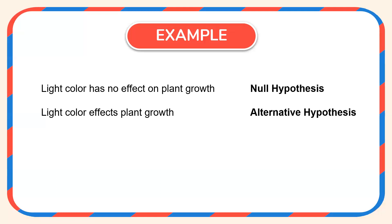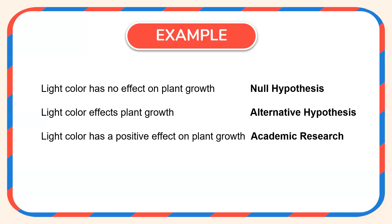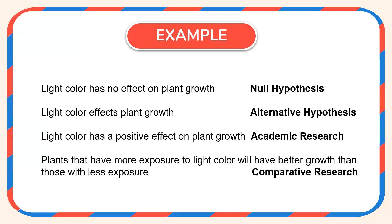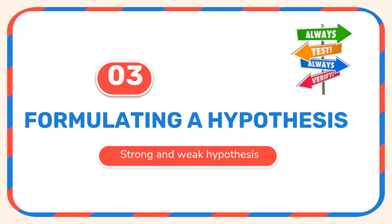There are different types of alternative hypothesis depending upon the purpose of research. For academic research, where we are very specific about the extent of effect, we can write: 'Light color has a positive effect on plant growth.' For comparative research, where we are comparing two aspects, we can write: 'Plants that have more exposure to light color will have better growth than those with less exposure.' Having understood null and alternative hypothesis, let us now move on to the third topic — formulating a hypothesis.